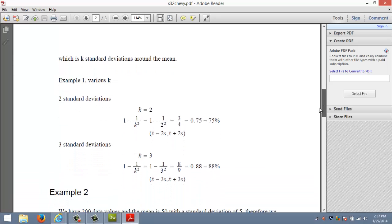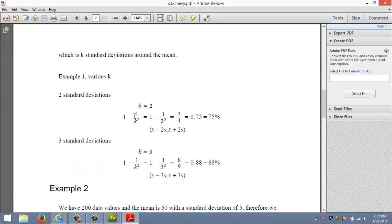Let's look at an example. Let's take two standard deviations. If I go two standard deviations that's 1 minus 1 over 2 squared. 1 over 2 squared is 1 over 4, so 1 minus 1/4 is 3/4.